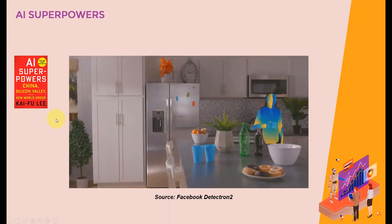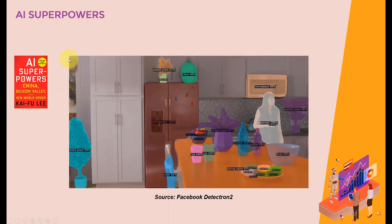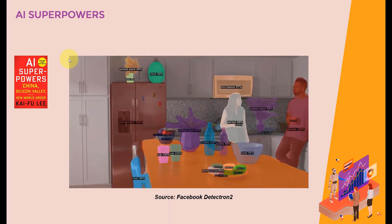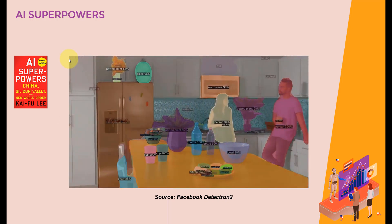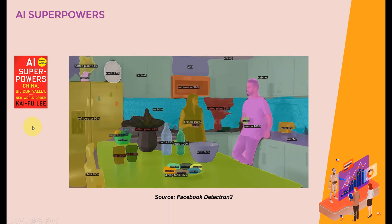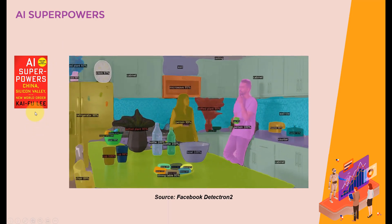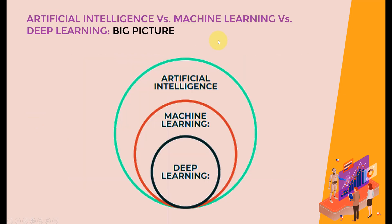There is a great book I highly recommend if you are interested in this exciting new field of AI and machine learning. The book is entitled 'AI Superpowers: China, Silicon Valley, and the New World Order.' So the next question is: what is the difference between artificial intelligence, machine learning, and deep learning?